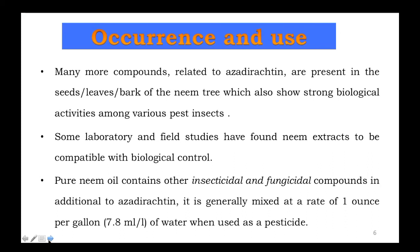Pure neem oil contains other insecticidal and fungicidal compounds in addition to azadirachtin. It is generally mixed at a rate of one ounce per gallon — that is 7.8 ml per liter of water — when used as a pesticide.